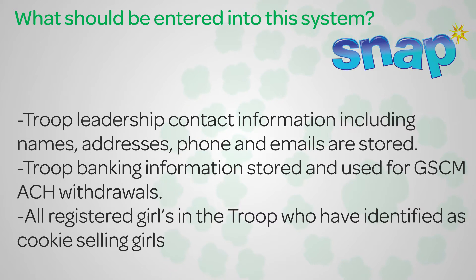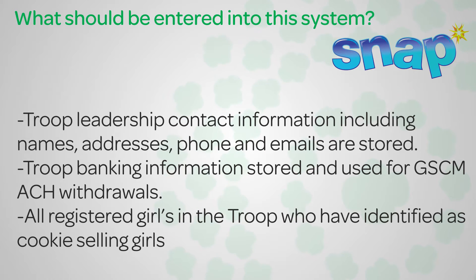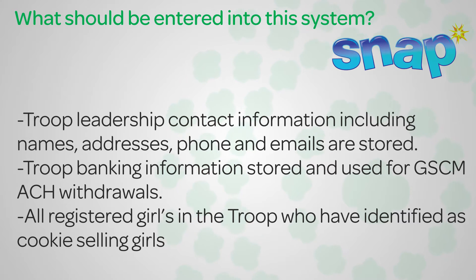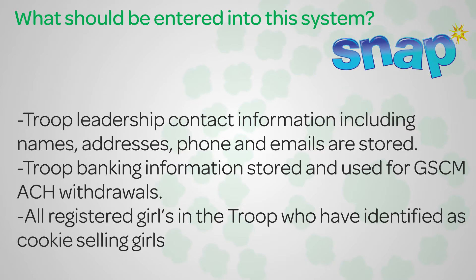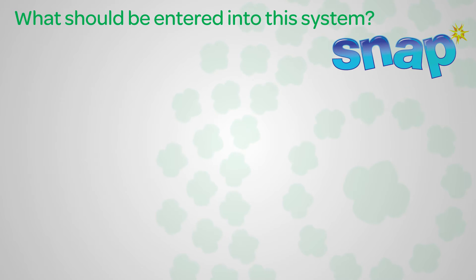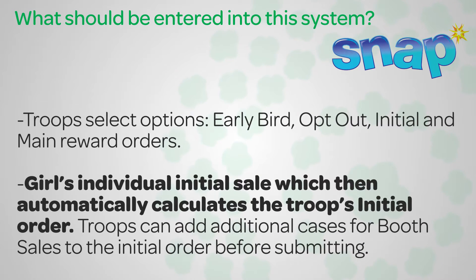So what should be entered into the system? The troop leadership contact information, including names, addresses, phone, and emails, are stored in SNAP. Troop banking information is stored and used for GSCM's ACH withdrawals. All registered girls in the troop who are identified as cookie-selling girls. The troop selects their options for early bird, opt-out, initial, and main reward orders.